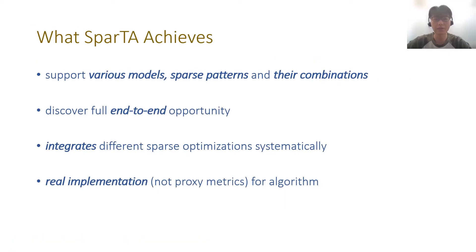With these design highlights, SPARTA can support various models and sparse patterns. Instead of an operator-centric view, SPARTA exposes graph-level optimization opportunities during sparsity optimization. More importantly, SPARTA can integrate different sparse optimizations systematically to achieve better performance on complex sparsity patterns. SPARTA also allows machine learning researchers to evaluate their sparsity ideas using real implementation rather than proxy metrics. In the following sections, we will evaluate SPARTA against these four points.